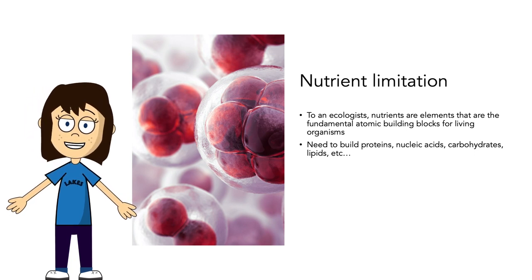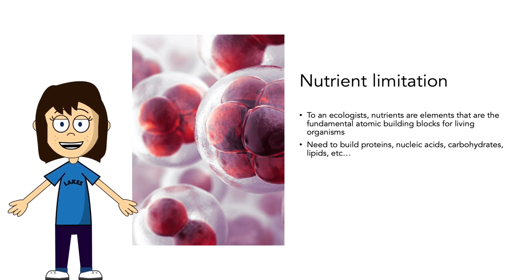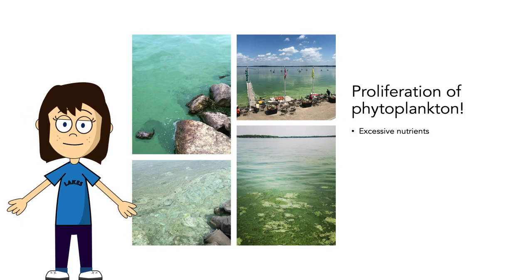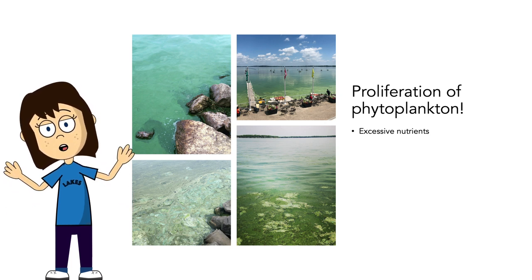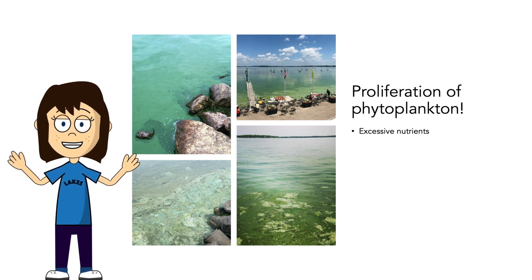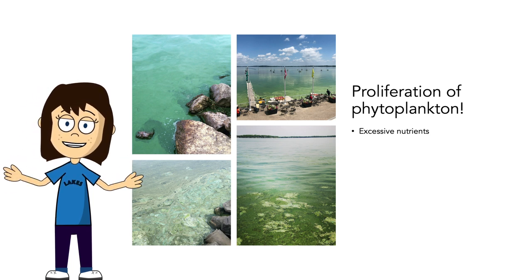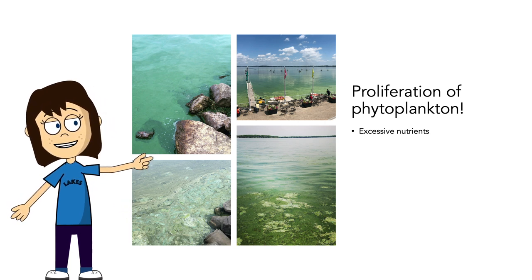When we have an excess of nutrients — a lot of phosphorus and nitrogen in our lakes — this leads to a proliferation of phytoplankton, because nutrients are no longer limiting phytoplankton growth. And so Lake Mendota ends up looking like this in the summer, purely as a result of too high concentrations of nutrients.